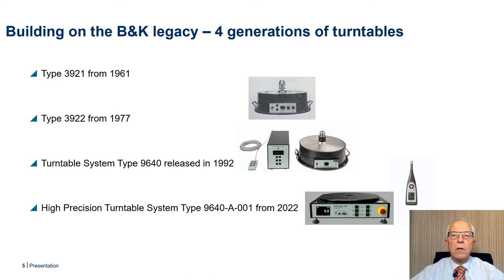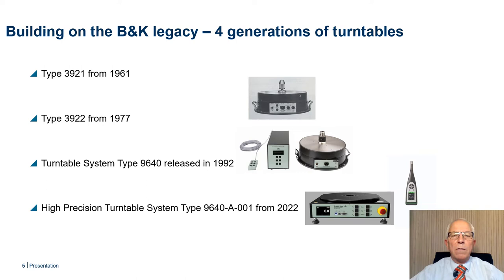Back in 1961, the first turntable was developed by Brülenker. Some 16 years later, a revised turntable was introduced to the market. In 1992, the turntable was revised again — this time the focus was to introduce modifications required for CE compliance. It was also at this time that the possibility for remote control from a PC was introduced, with a control box enabling remote control over IEEE 488 interface. A panel for remote control directly by the user was also introduced. Considering that parts of the design dated back to 1961, it was becoming more and more challenging to manufacture the turntable, and it was decided to discontinue it and introduce a new high-precision turntable.